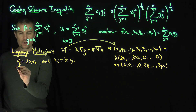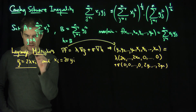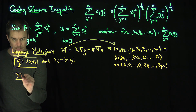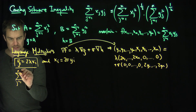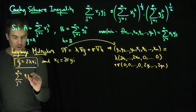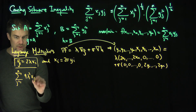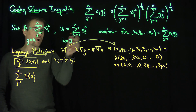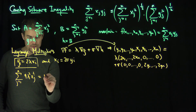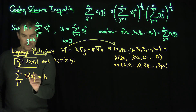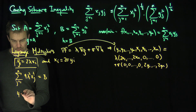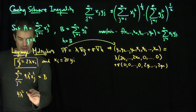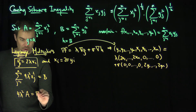Now, I know by the constraint that if I sum these expressions up and square them, I have to get b. In other words, if I take the sum j goes from 1 to n of 4 lambda squared xj squared — that's exactly yj squared — that has to add up to b. But 4 lambda squared is just a constant, so that's 4 lambda squared times the sum of xj squared, which equals a. So now I have a relationship between a and b.